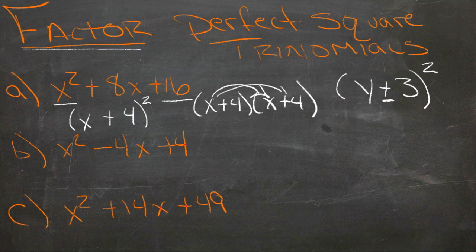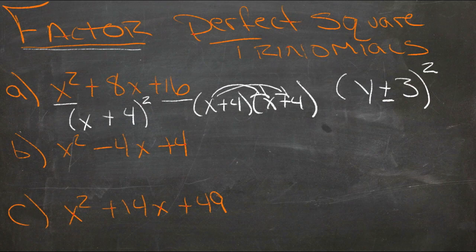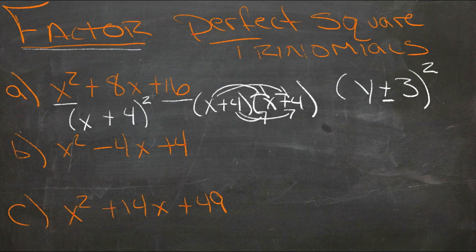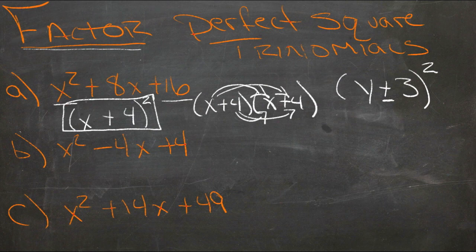We'd have x times positive 4, that's 4x. Positive 4 times x is another 4x, so there's our 8x. And then positive 4 times positive 4 is positive 16. So yeah, that works. And then this is the factored form of this distributed trinomial.